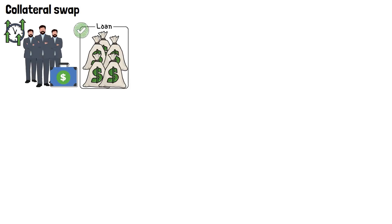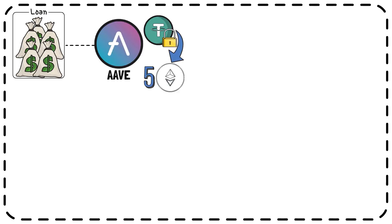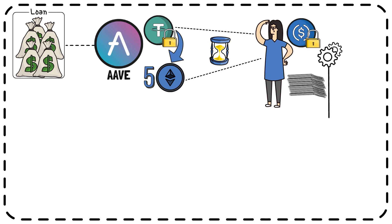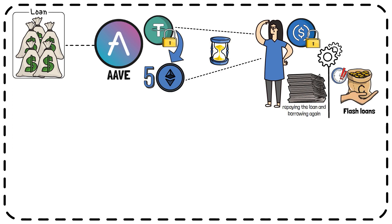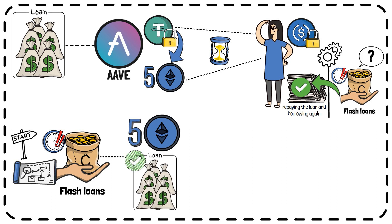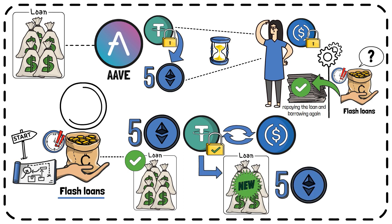The next use case for a crypto flash loan is a collateral swap. This method allows investors to quickly repay an existing loan before taking out a new loan with better terms. For example, imagine you took a loan on Aave using Tether as collateral to receive 5 Ether, but now you want access to your Tether while still borrowing 5 Ether, this time using USD Coin as collateral. Rather than a complex manual process, a flash loan lets you borrow 5 Ether, repay the existing loan, receive your Tether, swap it to USDC, and take another loan for 5 Ether — all executed in mere seconds.